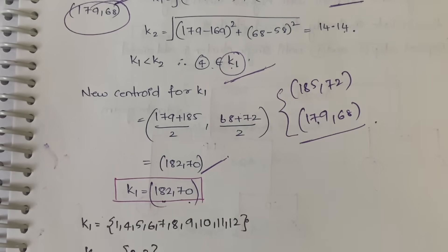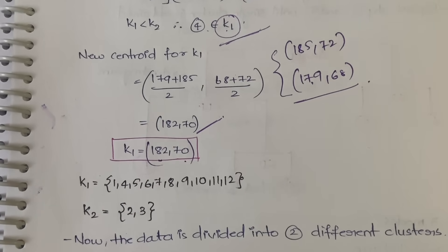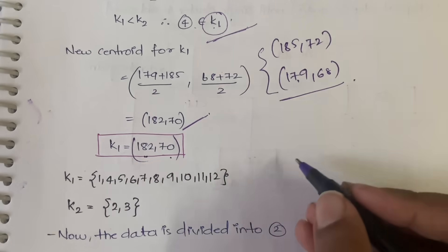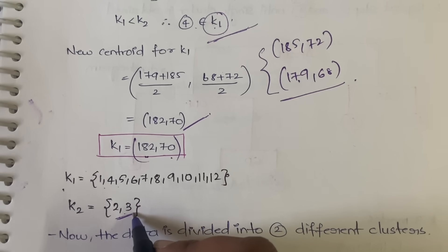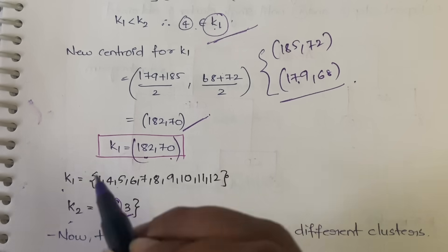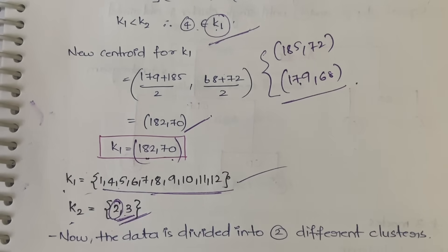This process continues for each subsequent data point — if data point 5 belongs to k1, update k1's centroid; if it belongs to k2, update k2's centroid. After completing all calculations for all 12 data points, the result is that except for data points 2 and 3, all other points fall under k1. Data point 2 was initially assigned to k2 and data point 3 moved into k2, so the data is divided into two clusters.